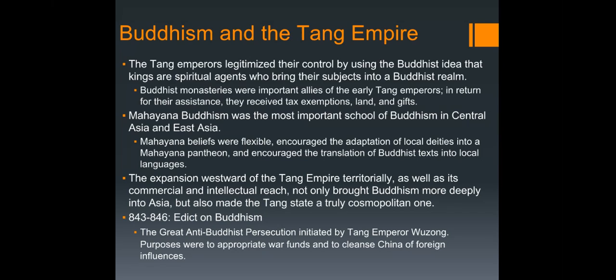The westward expansion of the Tang empire, along with its commercial and intellectual reach, made the Tang a truly cosmopolitan area. This is why the Tang are considered the Golden Age of China — because of how liberal most emperors were toward religion. However, not all emperors shared this view: from 843 to 846 there was the Edict on Buddhism.